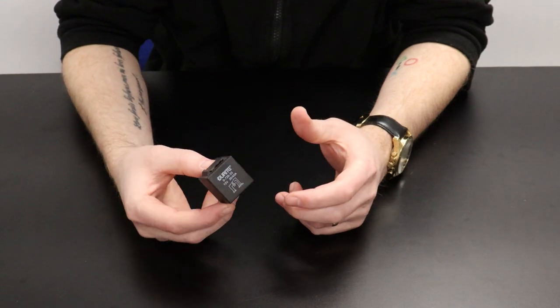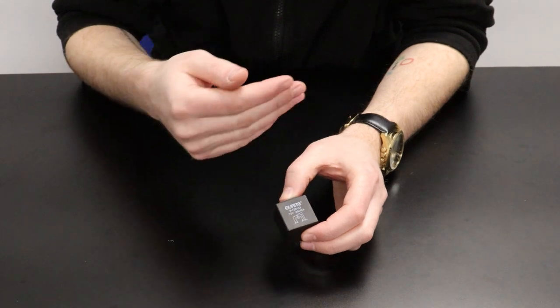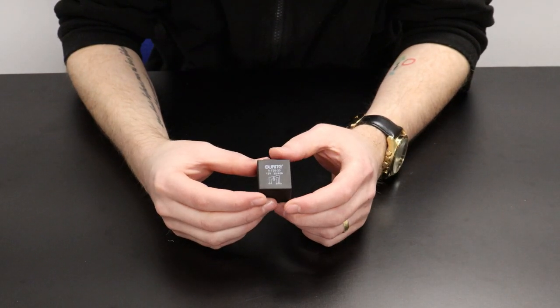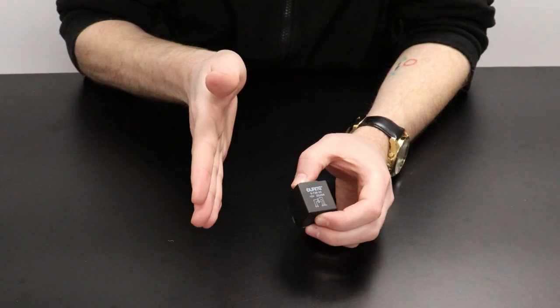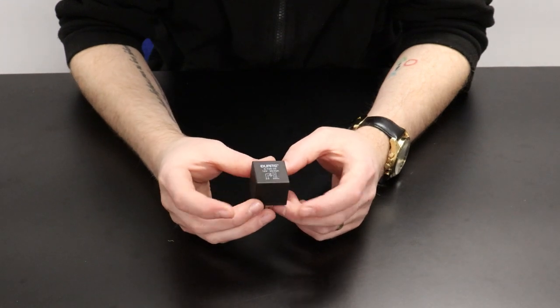As you apply and remove voltage to the coil, the contact will flick back and forth changing the output terminal that is connected to terminal 30. This is the reason for it being called a changeover rather than just a simple make and break.